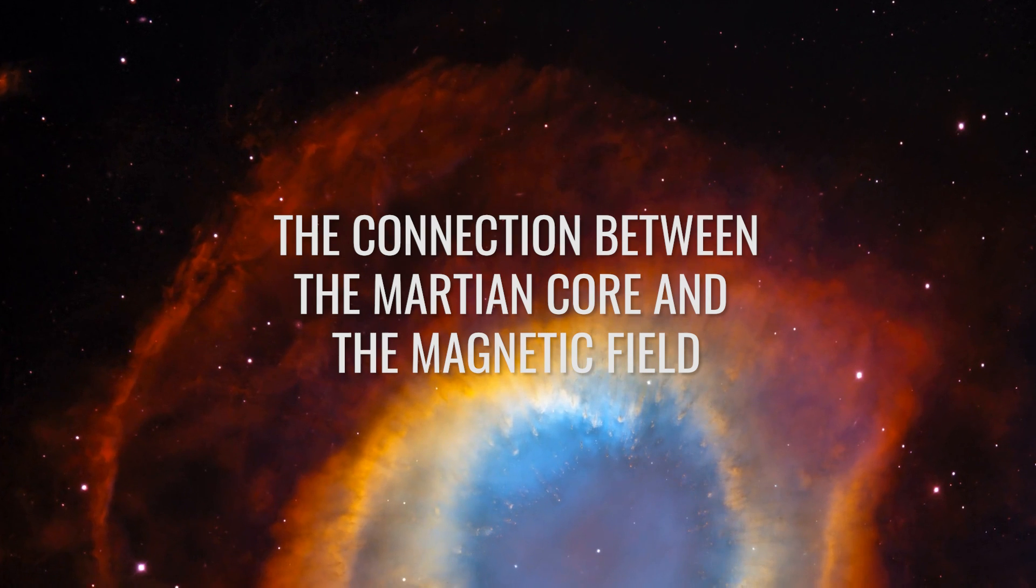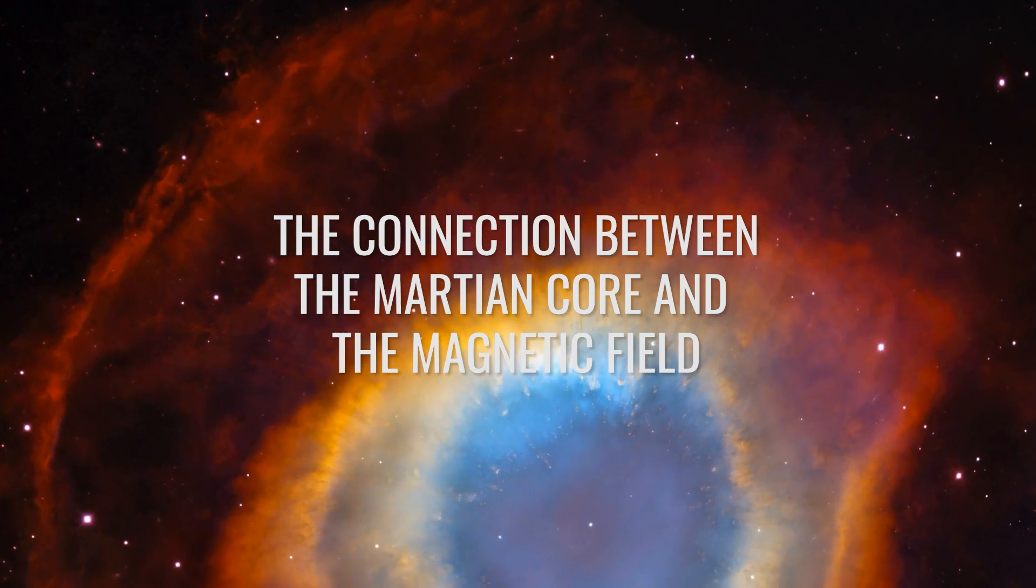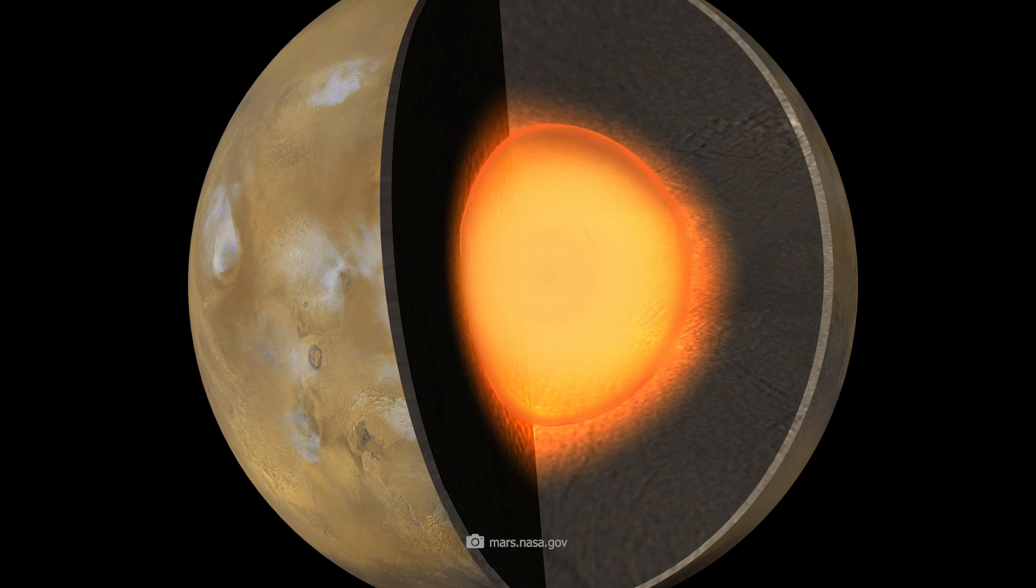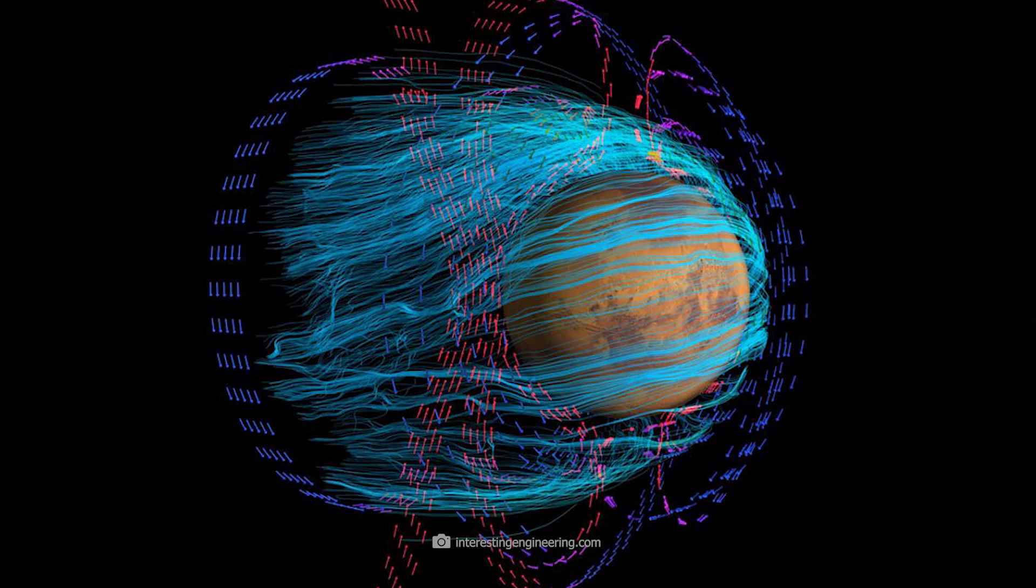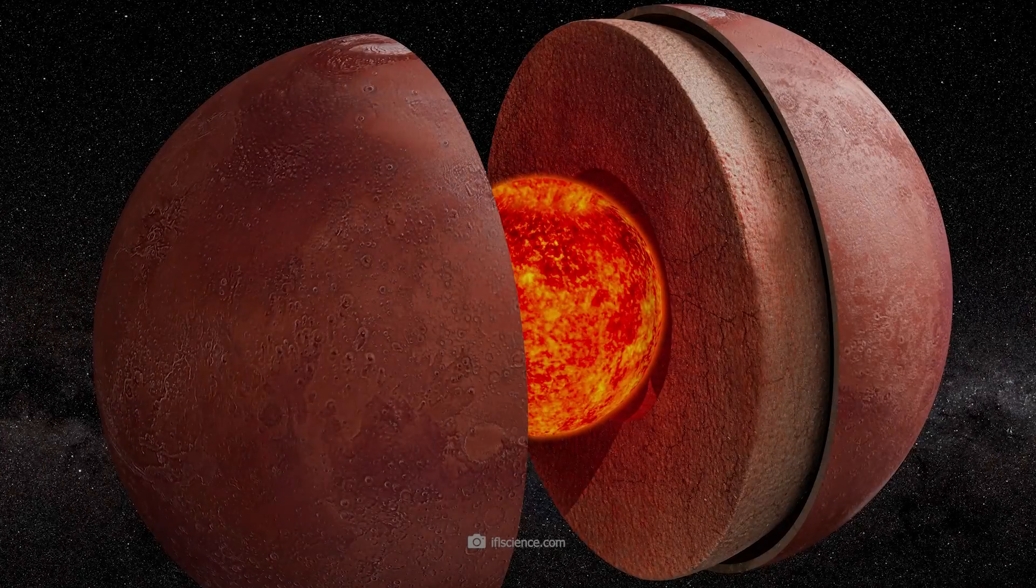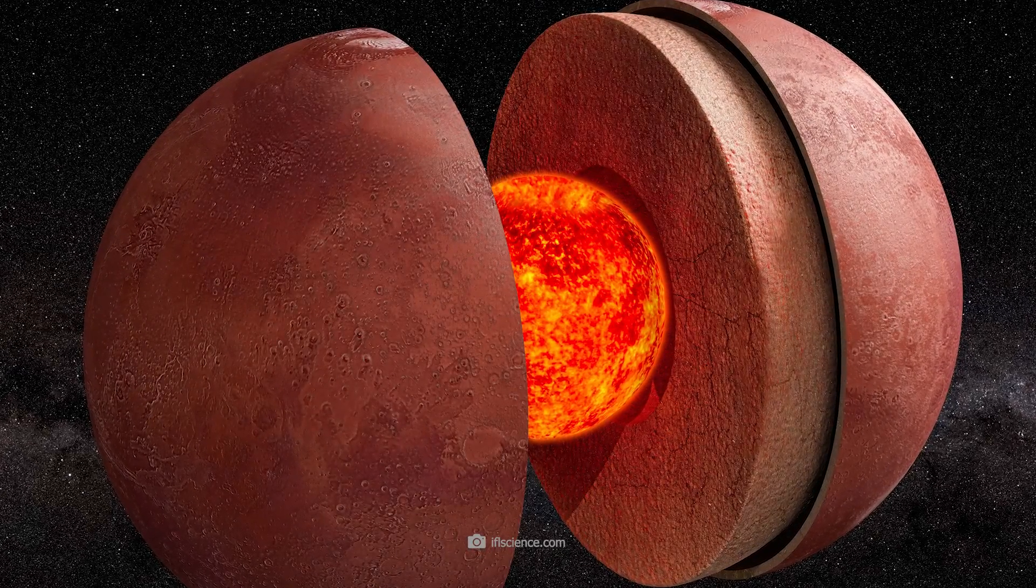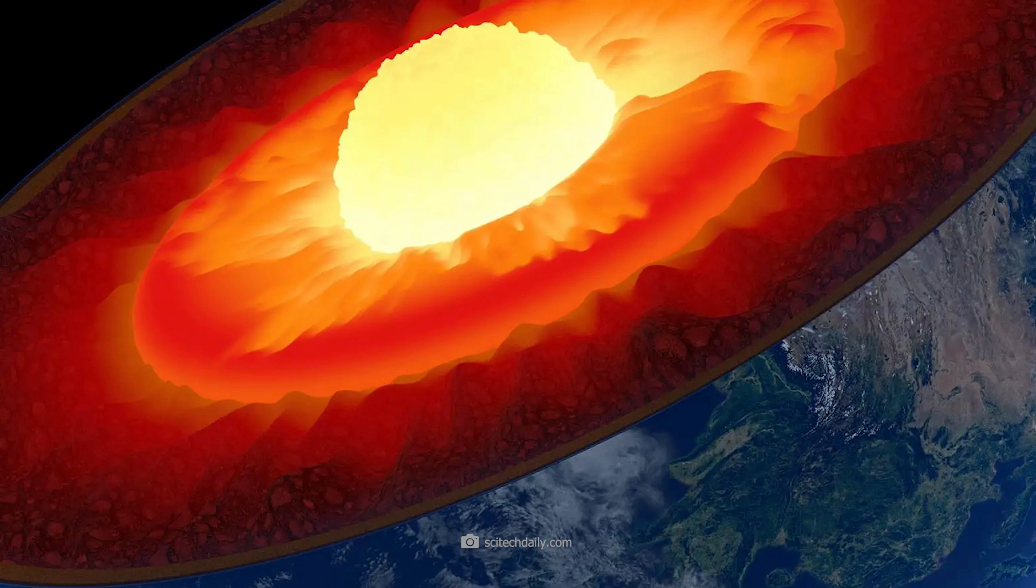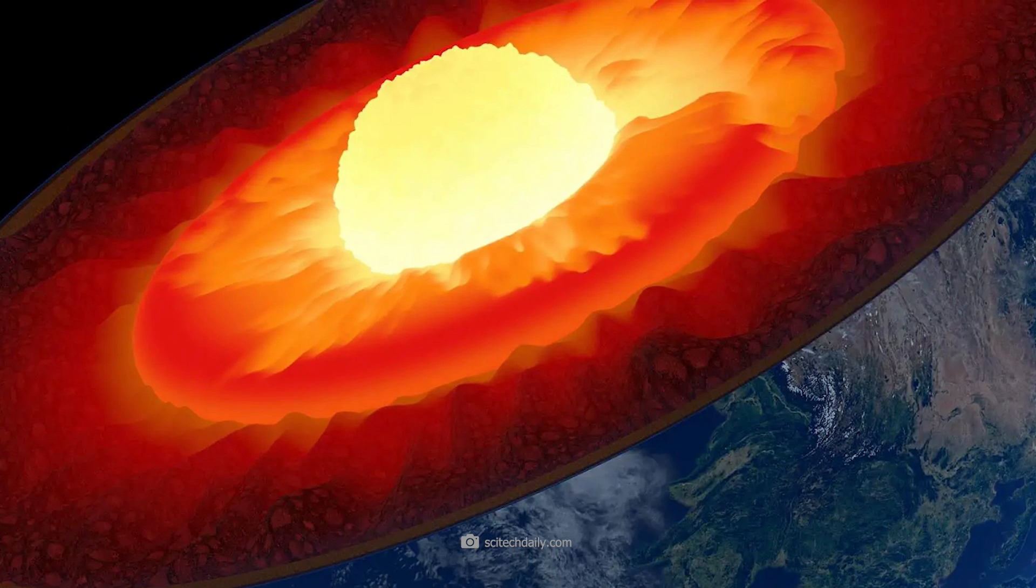The Connection Between the Martian Core and the Magnetic Field. Research on the structure of the Martian core revealed shocking connections between the planet's interior and the magnetosphere. Based on seismic data, the Martian core was found to have a liquid consistency throughout. In contrast, Earth's core consists of a solid inner core and a liquid outer core.